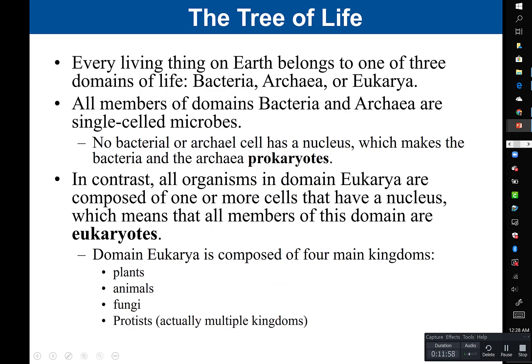Every living thing on Earth belongs to one of three domains of life: bacteria, archaea, and eukarya. All members of domain bacteria and archaea are single-celled microbes — unicellular, meaning made of one cell. They are called microbes because they can't be seen with the naked eye; you need a microscope. Bacteria and archaea cells do not have a membrane-bound nucleus — the DNA is not contained within a separate membrane. As a result, bacteria and archaea are what we call prokaryotes: 'pro' meaning before, 'karyote' meaning kernel — before the nucleus.